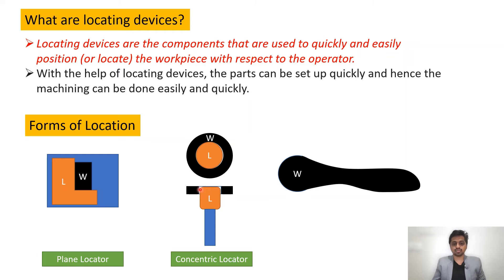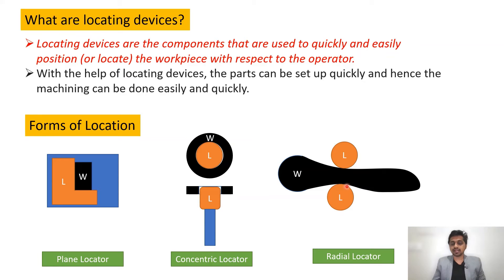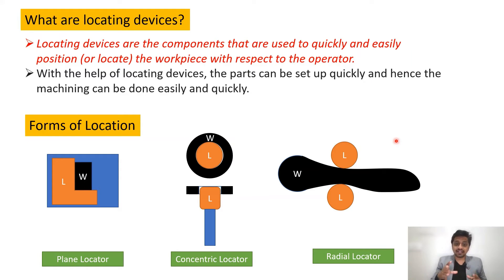Third is the radial locator — the locators touch the job radially, and you can place them according to the position of the job to restrict it as needed. You need to apply some engineering judgment to decide the positions of these locators. The 2D drawings play an important role here because they indicate which surfaces are machined — we generally prefer machined surfaces for locating as they give precise location.